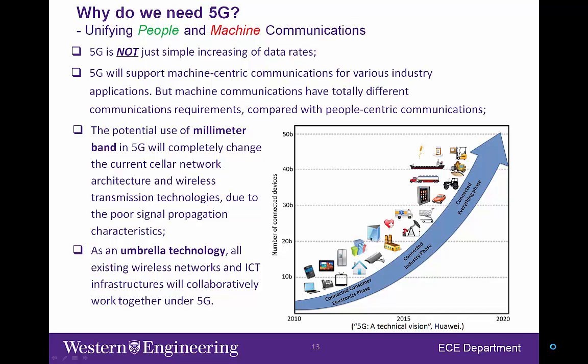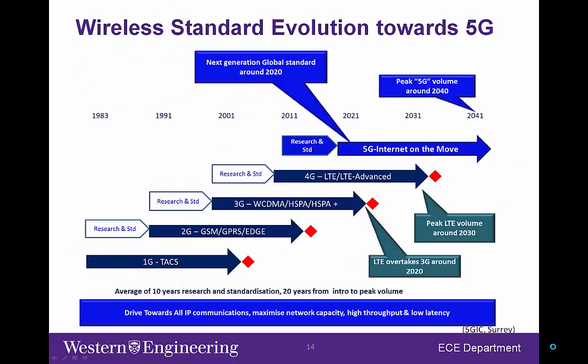As an umbrella technology, 5G will be expected to unify people and machine communications. We expect 5G will enable highly efficient, ultra-reliable, dependable, secure, privacy-preserving, and latency-critical services to everyone and everything. To put everything in perspective, we expect the draft 5G standard to be released at around 2020, which leaves an extremely tight schedule for 5G-related research and development.